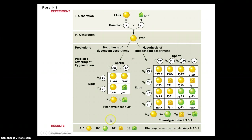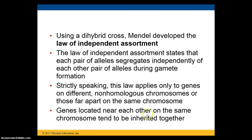The 9 to 3 to 3 to 1 ratio breaks down as: 9 yellow round, 3 green round, 3 yellow wrinkled, and 1 green wrinkled. Using this dihybrid cross, Mendel developed the law of independent assortment, which tells us that each pair of alleles segregates independently of each other pair of alleles during gamete formation.